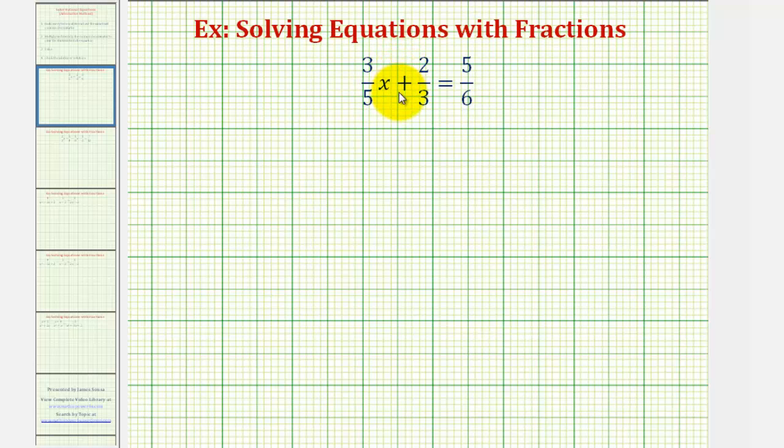But if we can't, it's often helpful to look at the prime factorization of the denominators. So for this first fraction, we have 3 fifths x, which would be equivalent to 3x over 5, and 5 is already prime. Plus 2 thirds, where 3 is already prime. Equals on the right we have 5 sixths. The prime factorization of 6 would be 2 times 3.